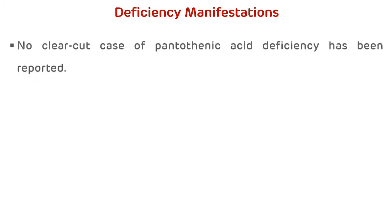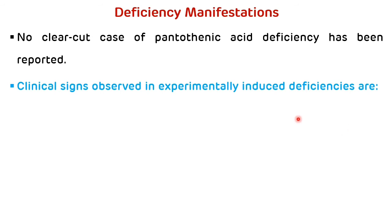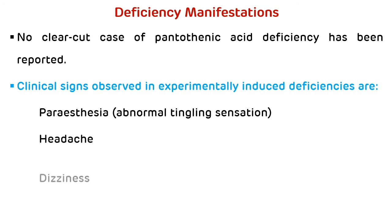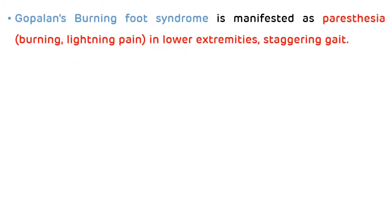Now deficiency manifestations of pantothenic acid. No clear-cut case of pantothenic acid deficiency has been reported. Clinical signs observed in experimentally induced deficiencies are paresthesia, that is abnormal tingling sensation, headache, dizziness, and gastrointestinal malfunction. One syndrome associated with pantothenic acid deficiency is Gopalan burning foot syndrome, which is manifested as paresthesia, that is burning and lightning pain in lower extremities and staggering gait.